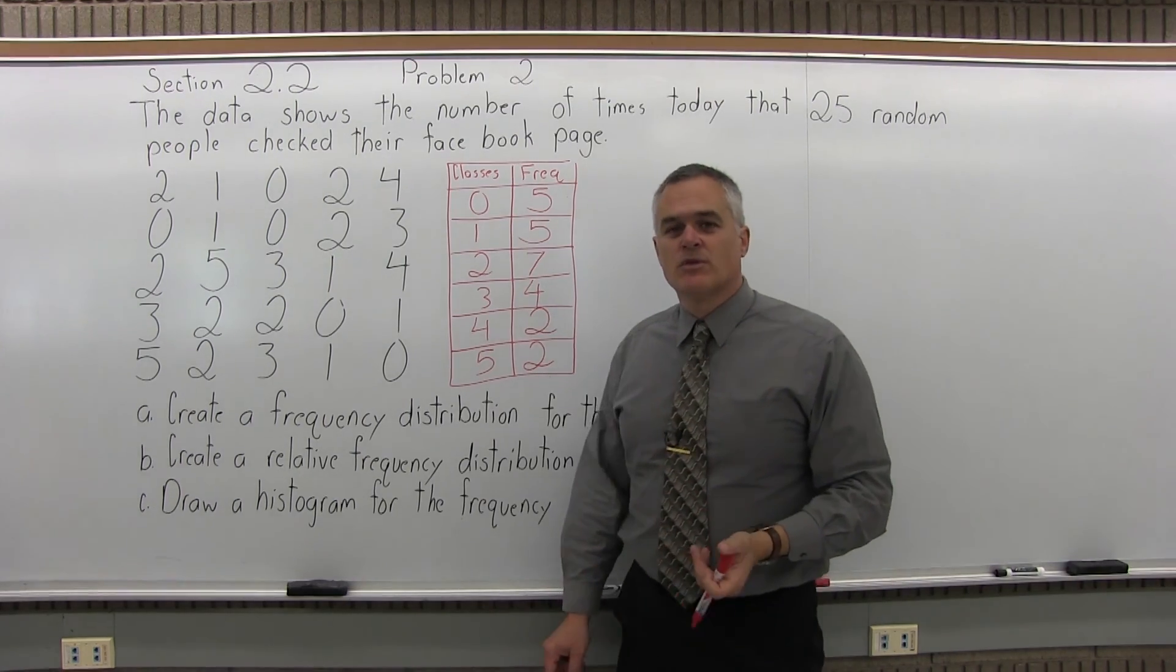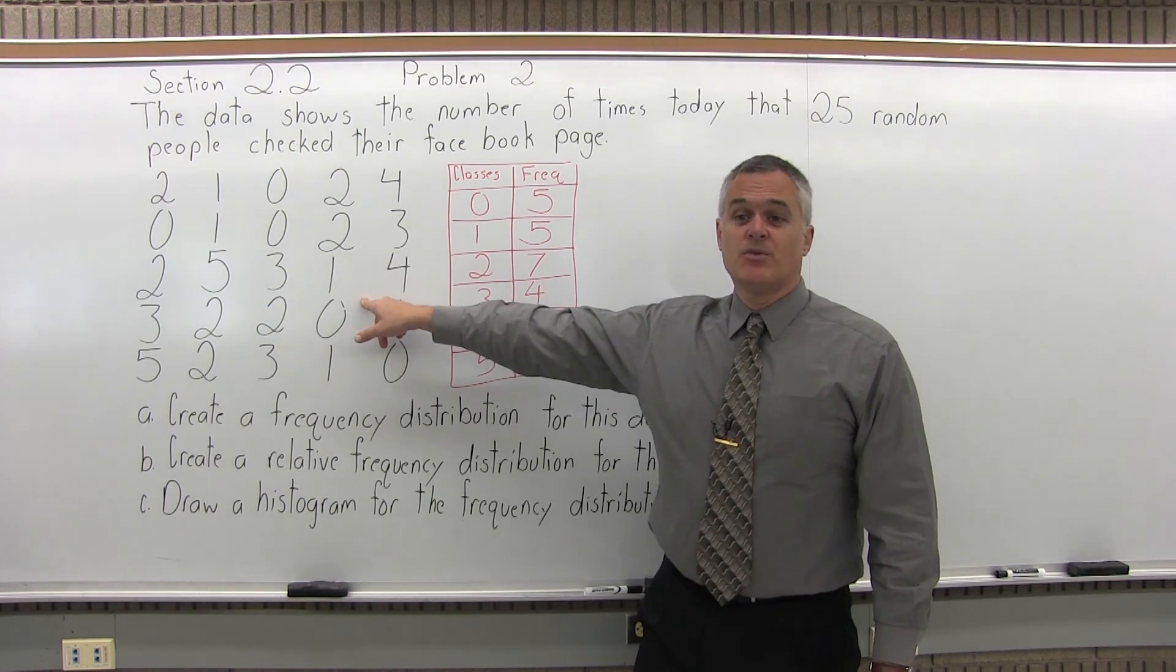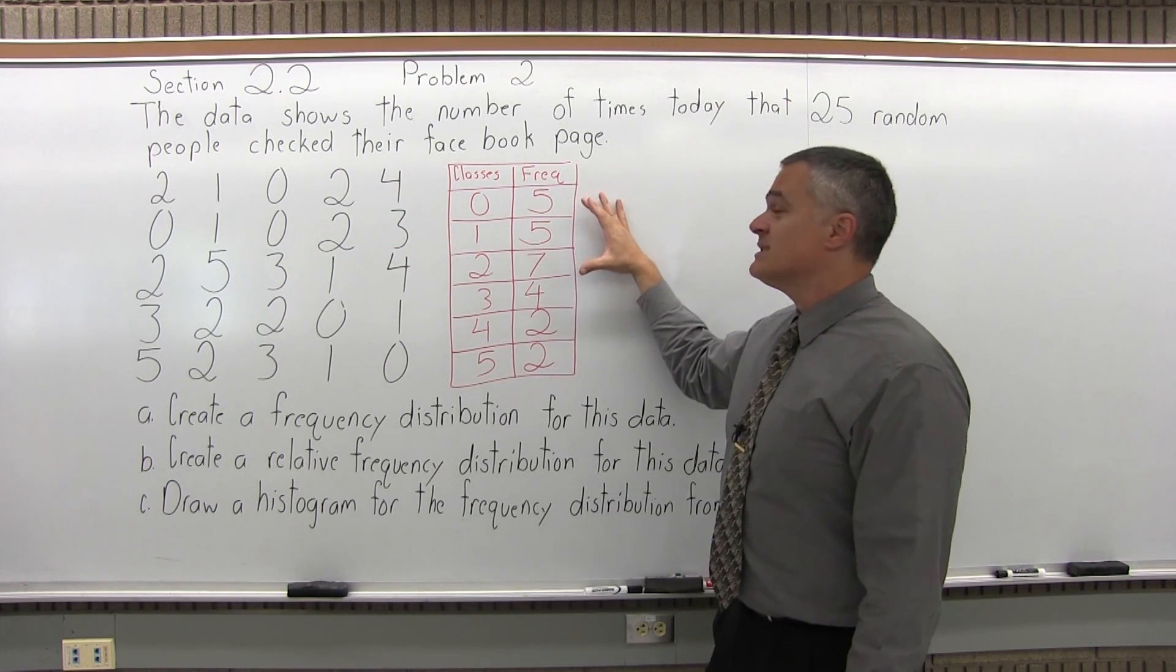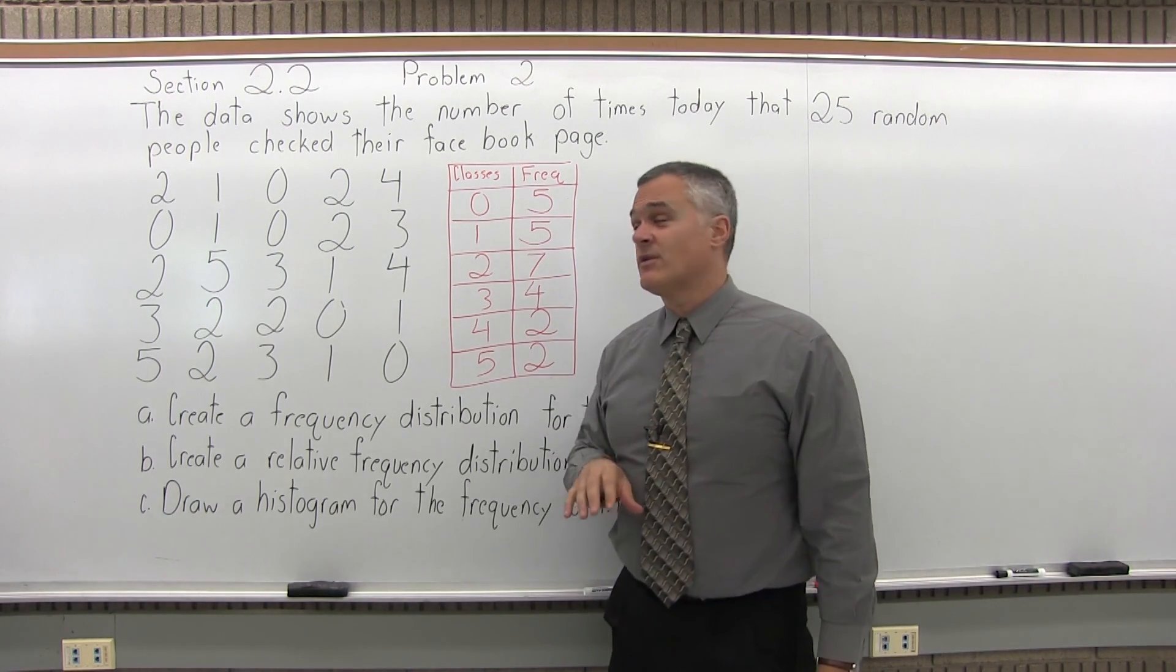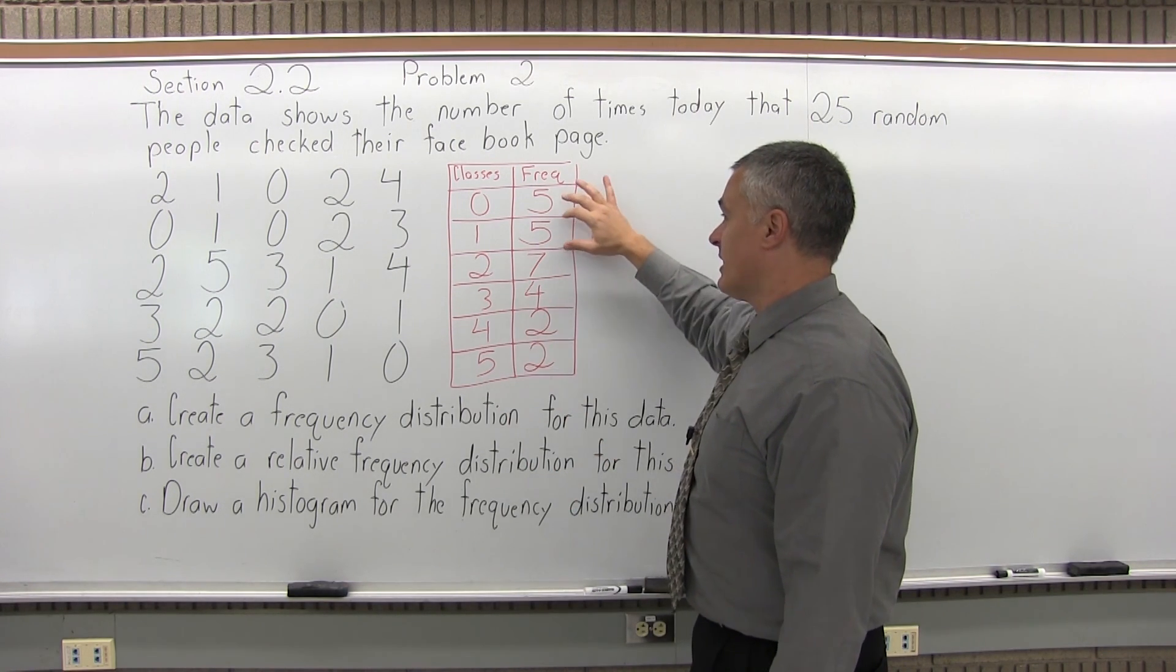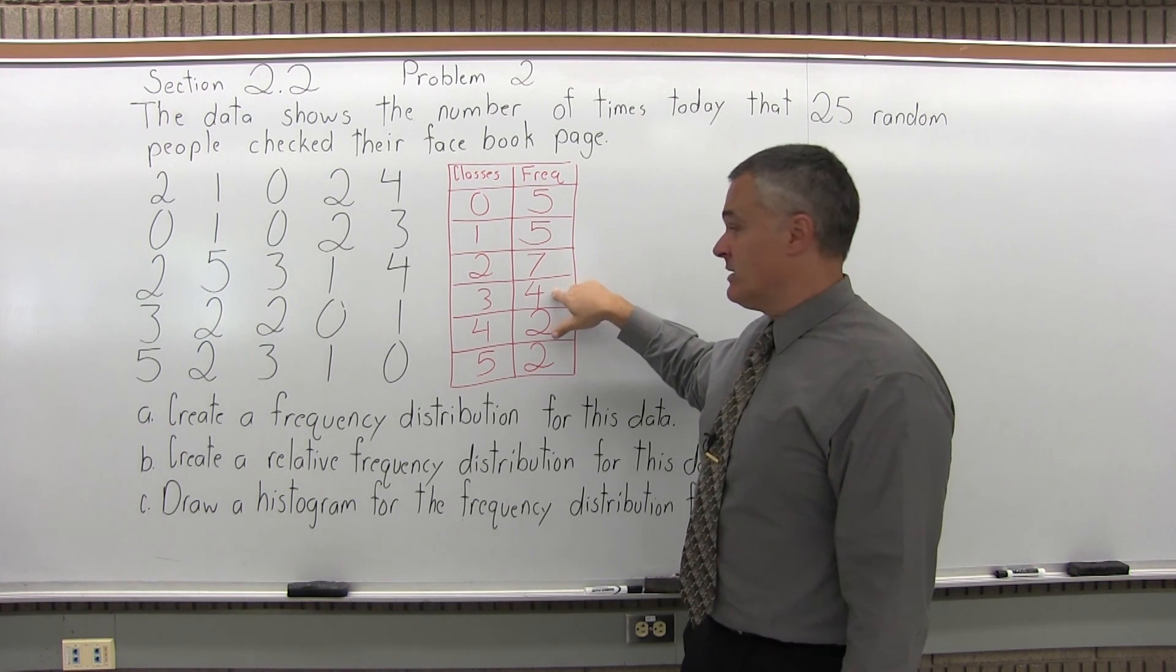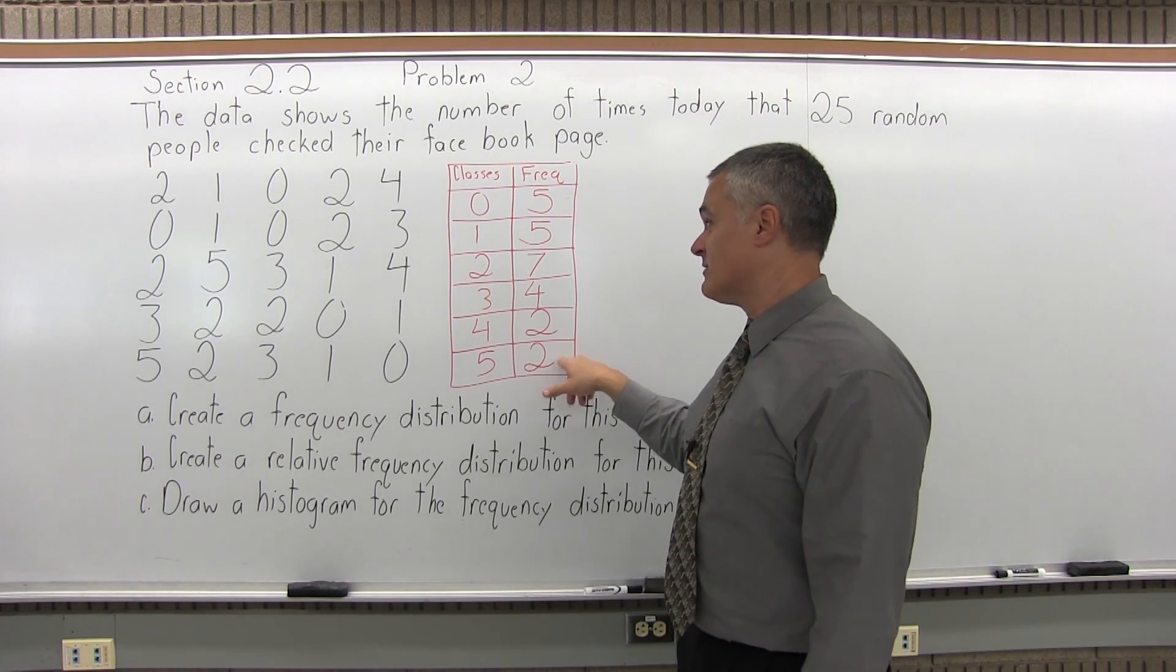Now at this point of doing a frequency distribution, it's good to see if your frequencies add up to a total of how many data points you have. So right in the question it says there's 25 people, and you can see there's 5 rows of 5, so 5 times 5 is 25. Do my frequencies add up to 25? And again, if they don't, I must have made a mistake. If they do, it's not a guarantee that you did it right. You may have made two mistakes where one off balances the other. But let's see what we get. So 5 and 5 is 10, 10 plus 7 is 17, 17 plus 4 is 21, then 21 and 2 is 23, and 23 plus 2 more is 25. It does add up to 25, so that's good.